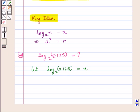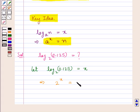Now using the key idea, we get that this implies 2 to the power of x is equal to 0.125.